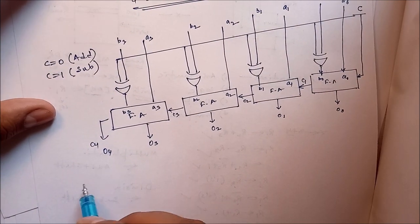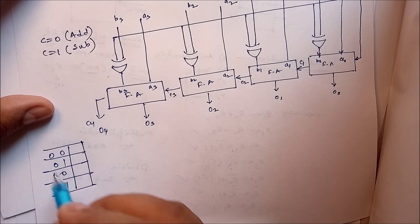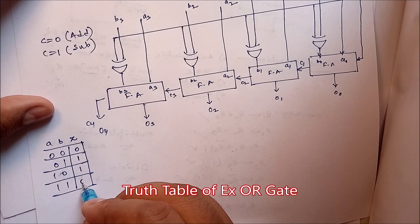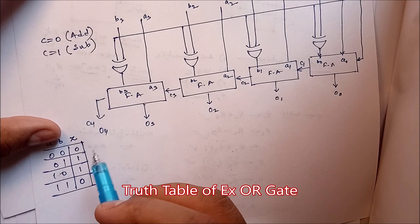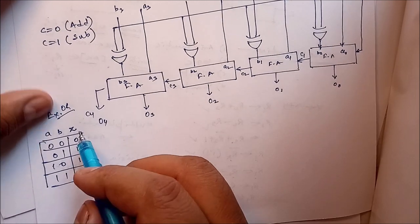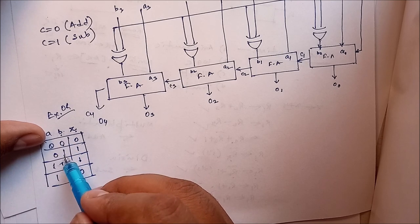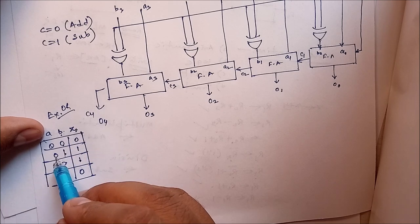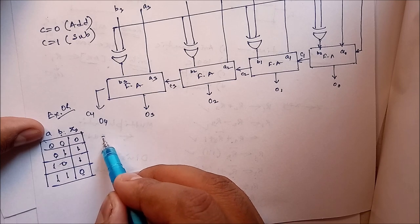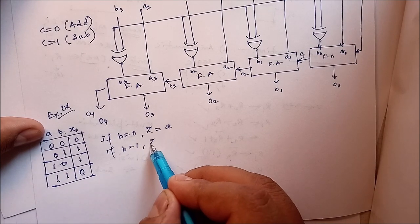Before that, let's see the truth table of the XOR circuit. Two inputs a and b, and the output z. The table is: 0,0 → 0; 0,1 → 1; 1,0 → 1; 1,1 → 0. You can see that if b is equal to zero, z will be the same as a — no change. But if b is equal to one, z will be the complement of a.